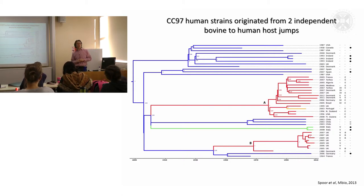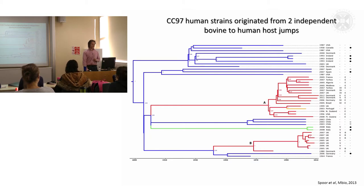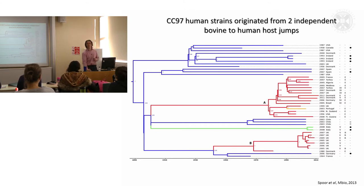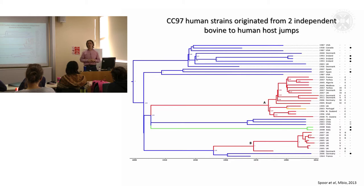Regarding how we know the direction is bovine to human and not the reverse — it's a very good question, and sometimes it's not clear from the tree. The reason we infer this is because the ancestral state, based on this tree, is predicted to be bovine. All of the diversity we see among the bovine strains contributes to this. If you go back in predicted time through the tree, we predict that the positions at the base of both human clades were bovine, so that infers the direction goes from bovine into human. We can only do this because we have a root on the tree, allowing us to infer the ancestor of all strains.